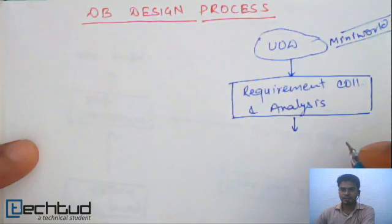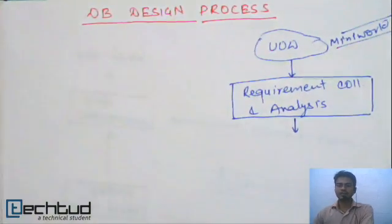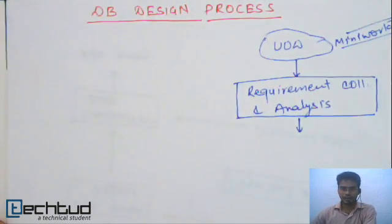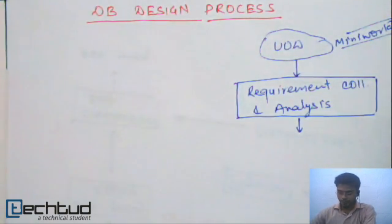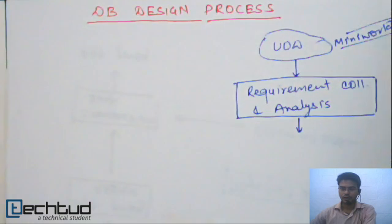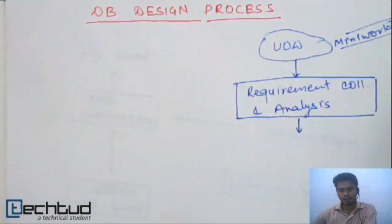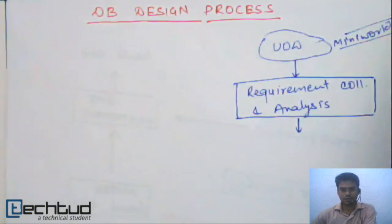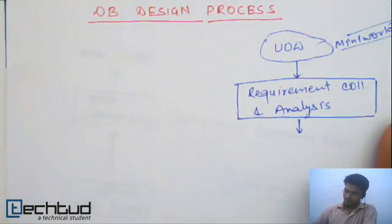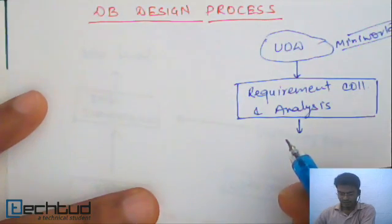We try to understand the requirement specification. For example, for a department database where a department is offering a course, we need to understand the requirements: a student will be opting a course offered by the department, and the department will have records of students and courses. These are all requirements we need to note down. The first step is requirement collection and analysis.